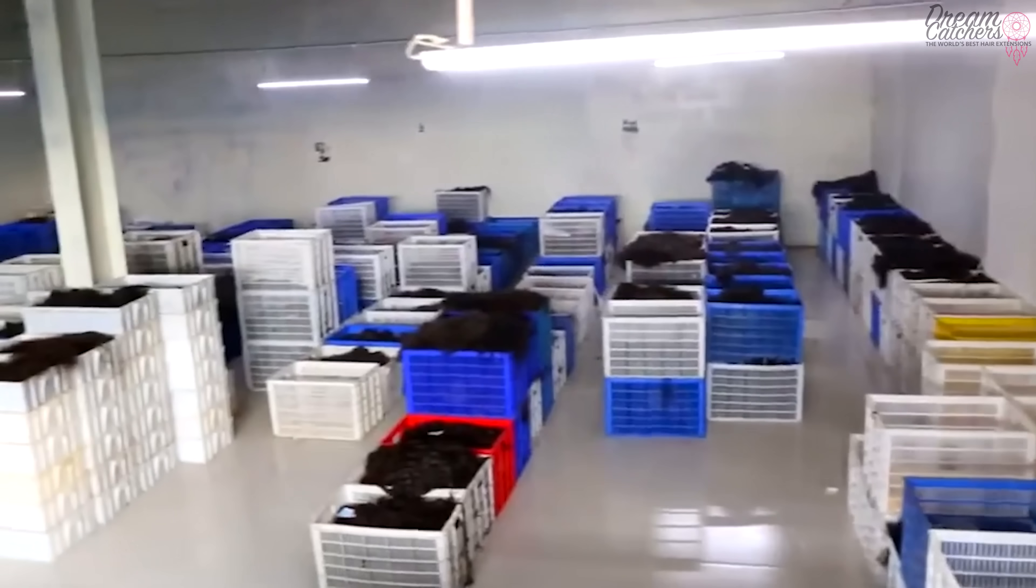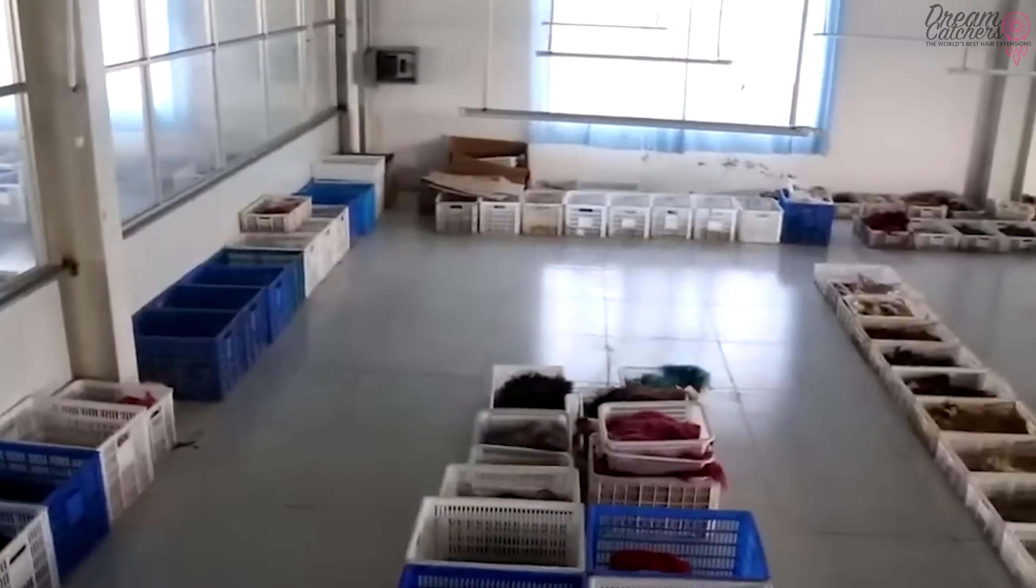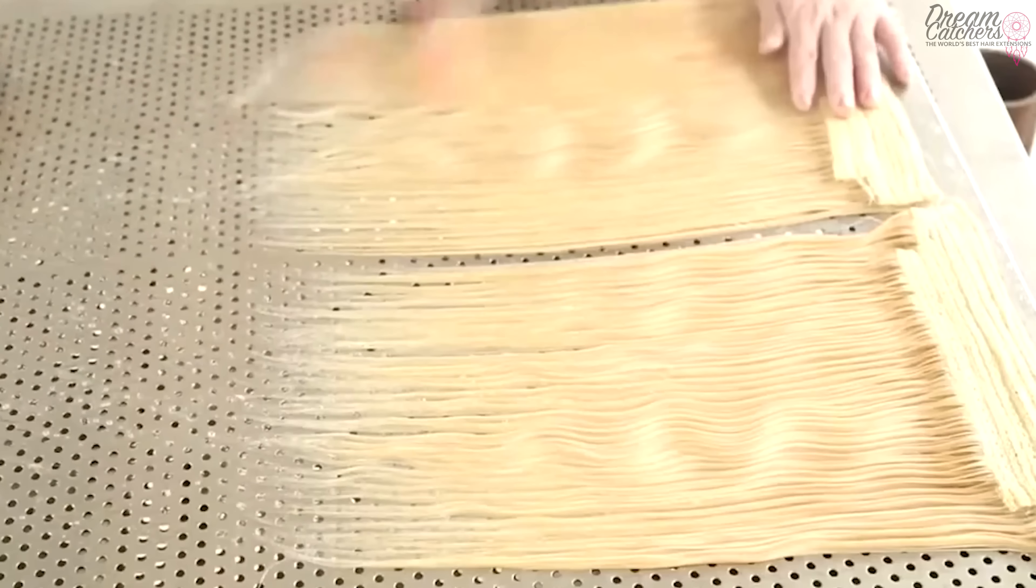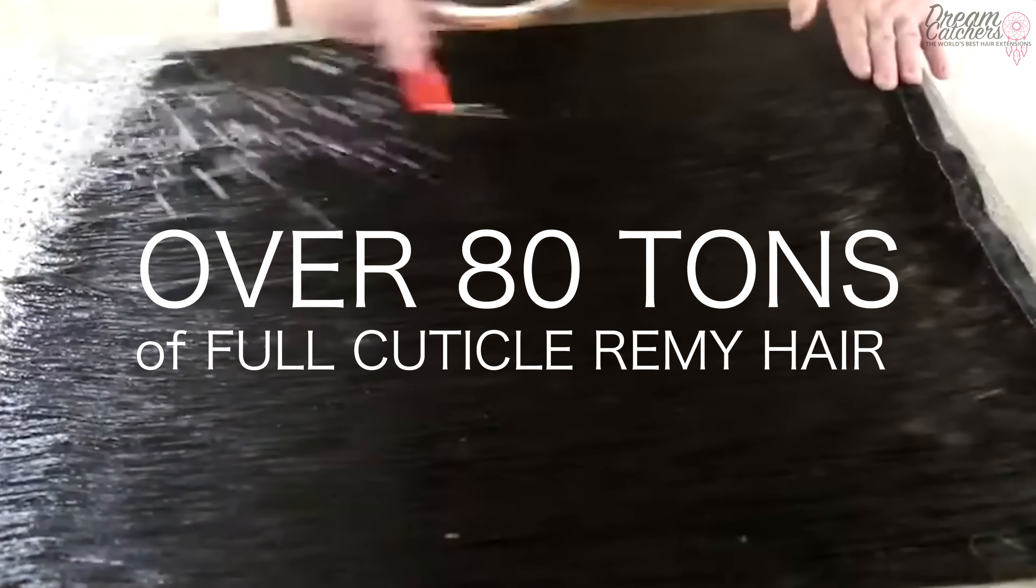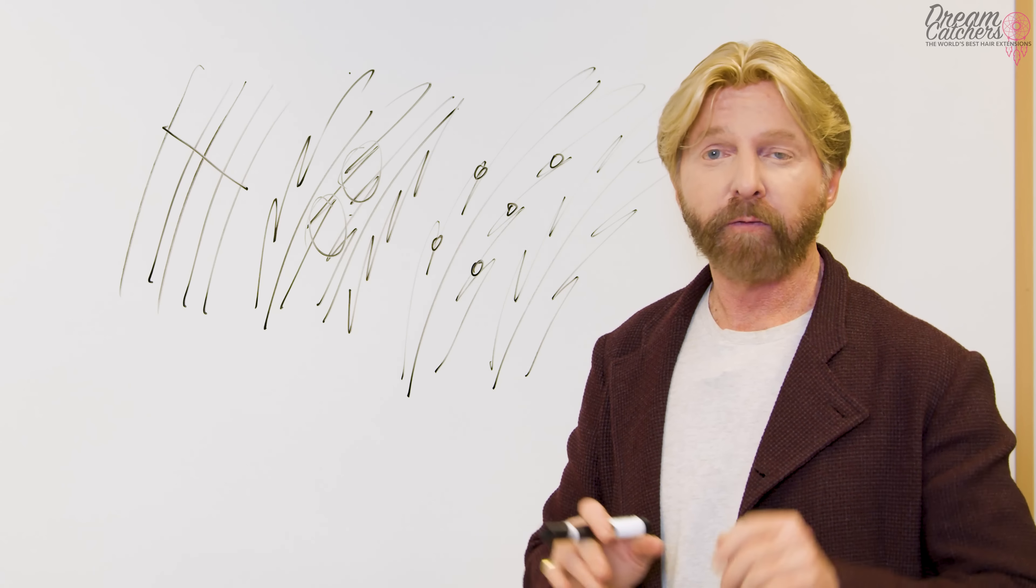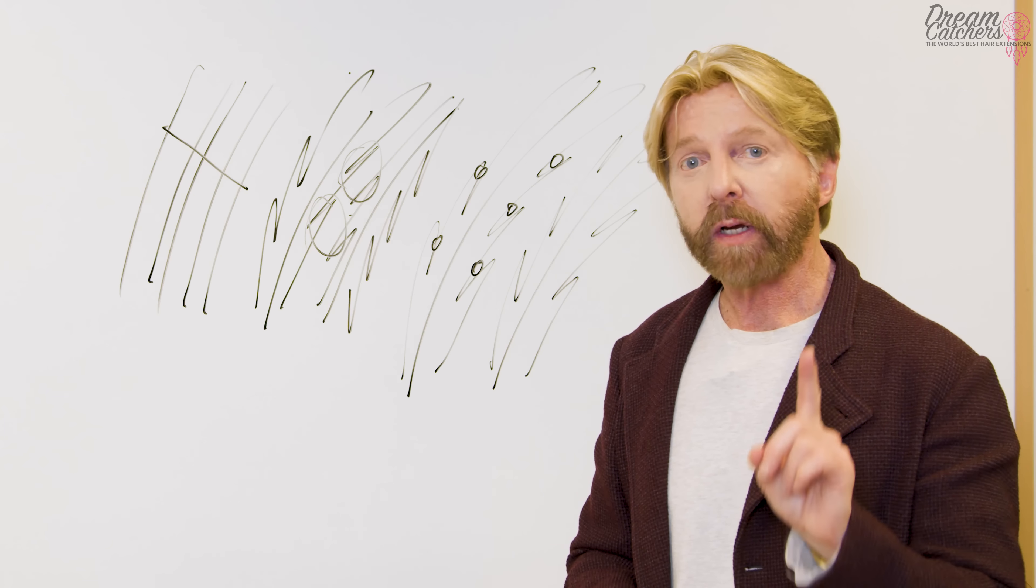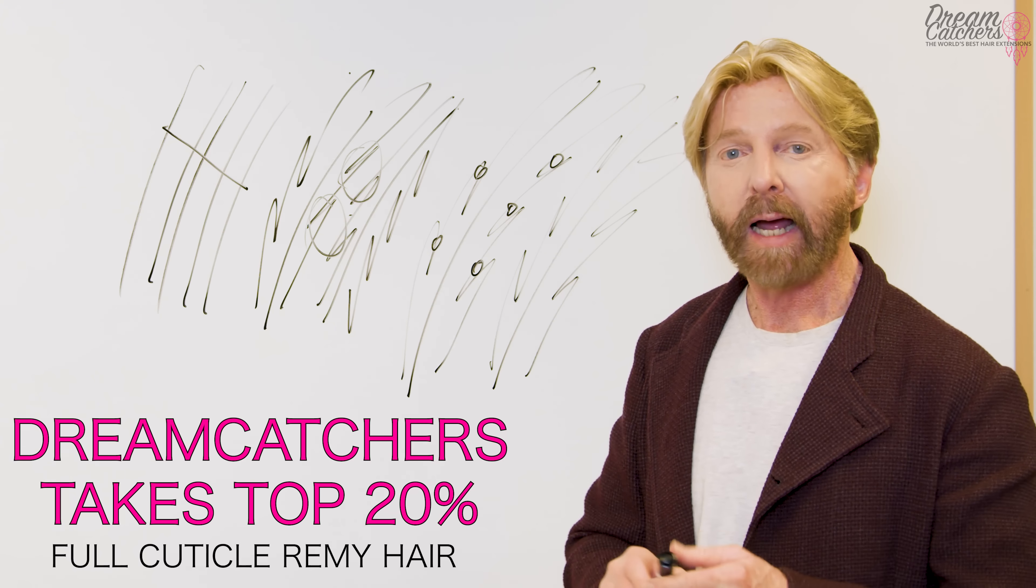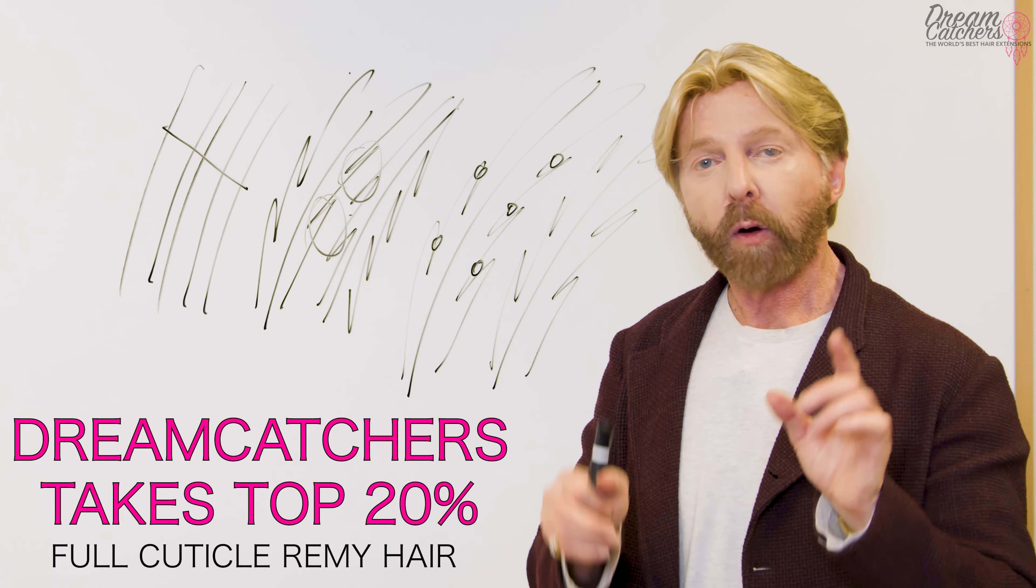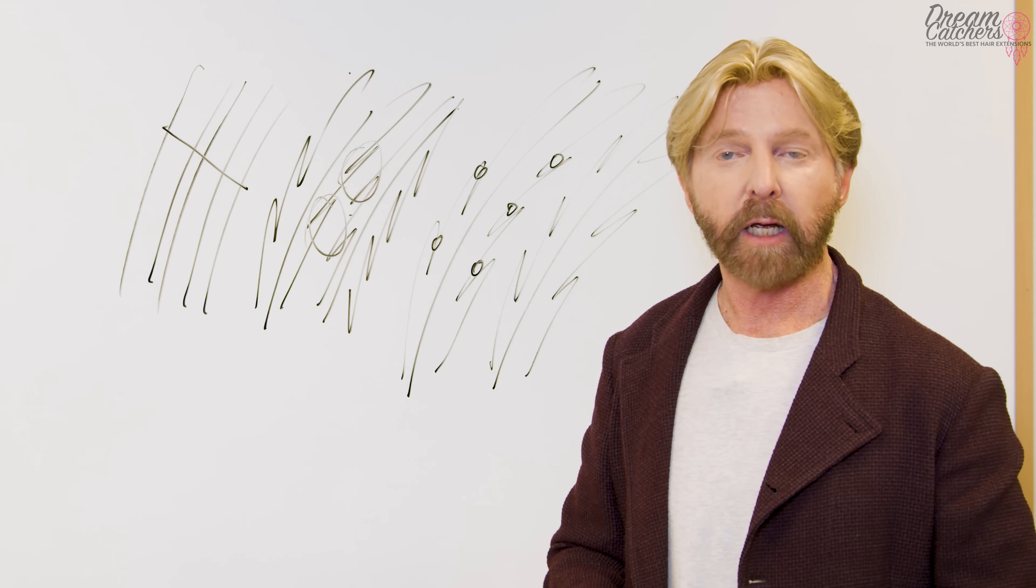You see, we're in partners with two major factories. Of course, they're located in China as they all are. However, one of the factories we're involved with is one of the major collectors of hair in the world. Currently, we have over 80 tons. Just to give you an idea, that's four football fields full of hair. Imagine that. It's incredible. So what we do is we actually take the top 20% of that full cuticle hair and that's what's used for DreamCatchers. The rest of the hair is then sold off to other hair extension companies and to wig manufacturers and the like.